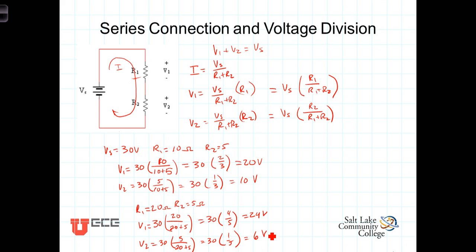Notice in each instance the two voltages have to add up to the total source voltage. 20 plus 10 is 30 volts. Similarly here, 24 plus 6 is 30 volts. But because of the relatively larger R1 in this instance, the voltage across R1 is larger than it was in the previous example.